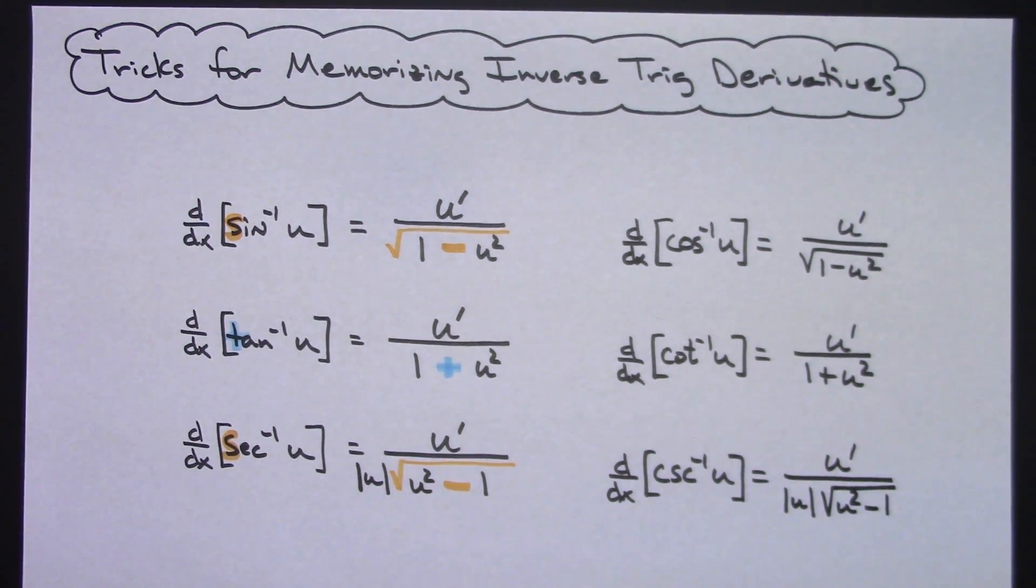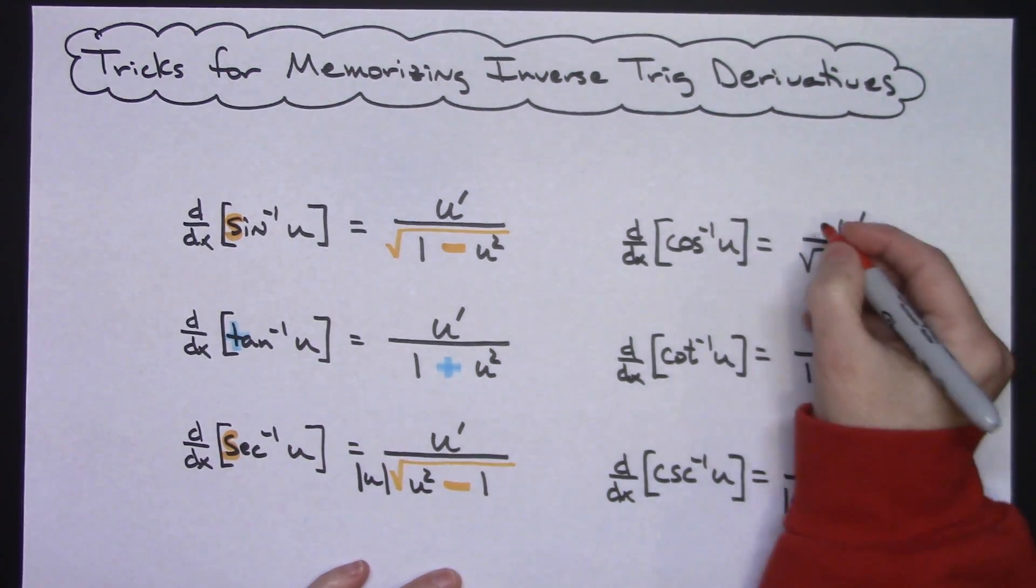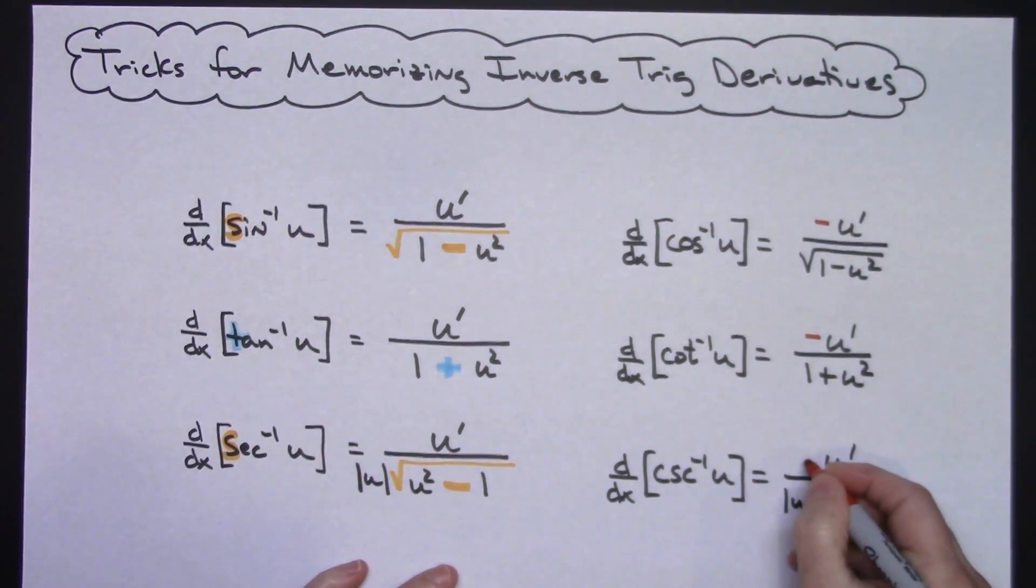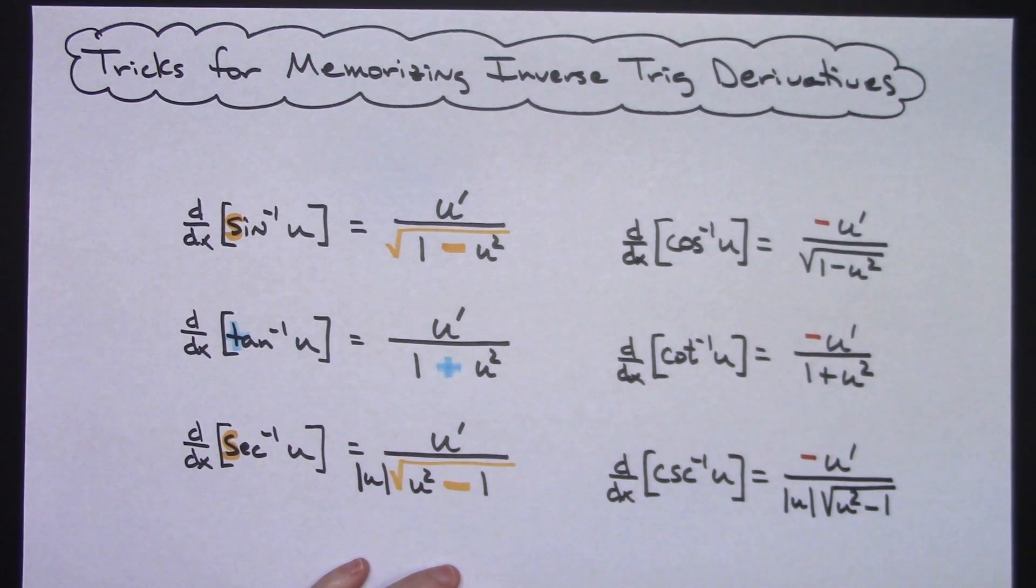Now I'm going to put in a different color the only thing you've got to remember to add is a negative, a negative, and a negative, because each one of the co's there are a negative. So just some little mnemonics and tricks to help you remember your inverse trig derivatives. If you like the video be sure and give me a thumbs up and definitely share with your friends. Thanks for watching.